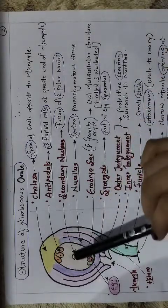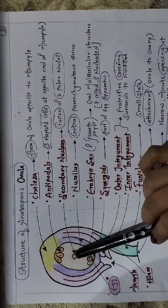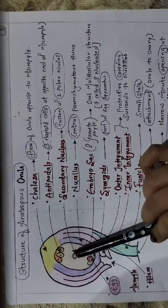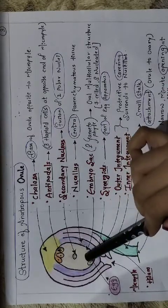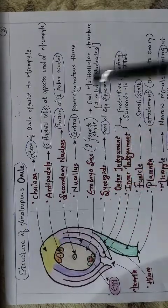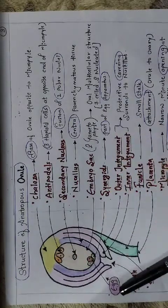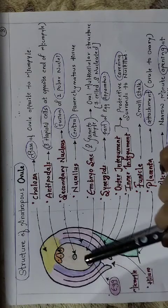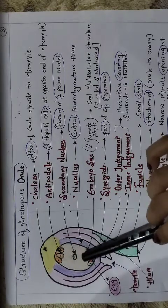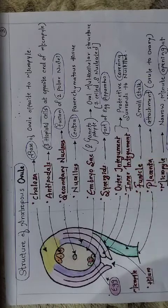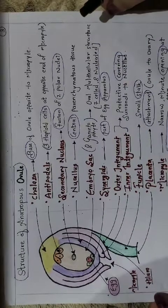There are seven cells but eight nuclei, because all cells have an individual nucleus except one cell — the secondary nucleus or polar nuclei — which has two nuclei, making the total count eight. This is the embryo sac where the female gamete (egg) is present, into which the pollen tube will enter and release two male gametes so that double fertilization can occur.